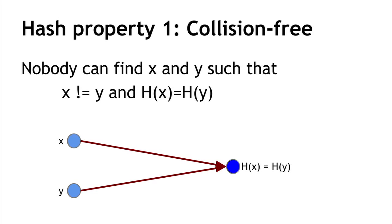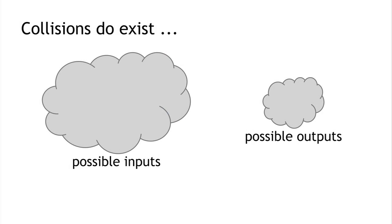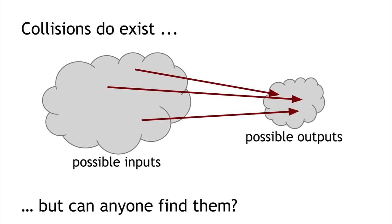Collisions do exist. Over here on the left are all the possible inputs, which can be a string of any size. Over here are all the possible outputs, which must be a string of 256 bits — only 2 to the 256 possibilities. Since every point on the left maps to some point on the right, it has to get crowded, and there have to be multiple values on the left that map to the same output. In general, there will be a very large number of possible inputs that map to any particular output. So collisions do exist.